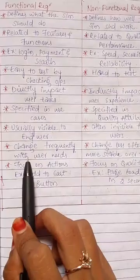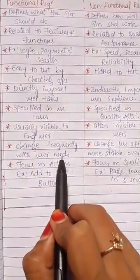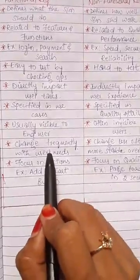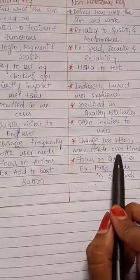Here the changes frequently with user needs. If the user needs any changes, those will happen frequently. In this, changes less often, more stable over time.